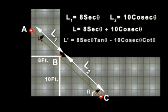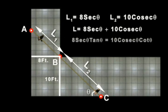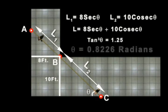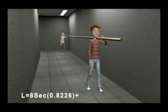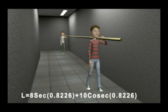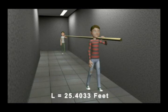We will minimize this new equation which gives theta is equal to 0.8226 radians. So if theta is equal to 0.8226 radians, then the pipe will have a minimum length which is equal to 25.4033 feet.